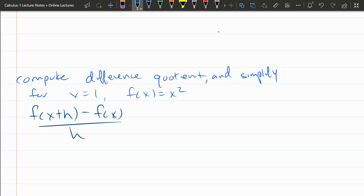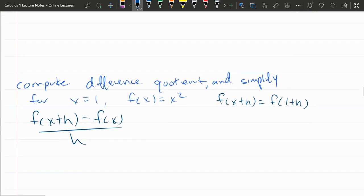Now our x value is 1, f(x) is here. Sometimes the most tricky part is this f(x+h). So our x value again is 1, so we have f(1+h).